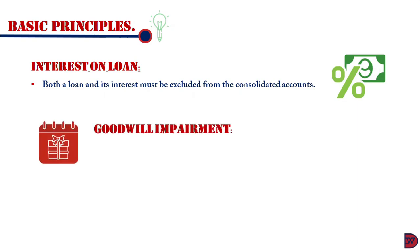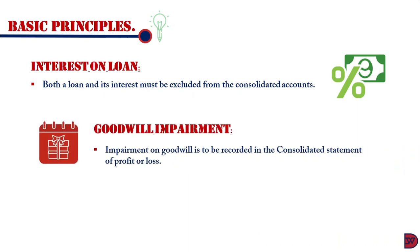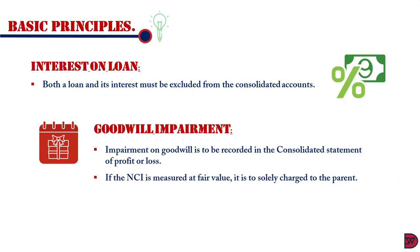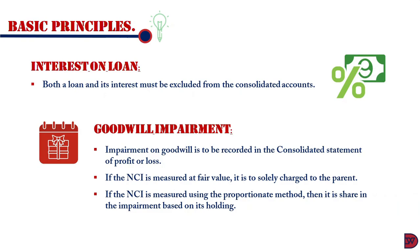Lastly, goodwill impairment. Any goodwill impairment must be recorded in the Consolidated Statement of Profit or Loss. If the non-controlling interest is measured at fair value, the impairment value is to be absorbed solely by the parent. However, if the non-controlling interest is measured by the proportionate method, then the non-controlling interest will bear a share based on its holding.